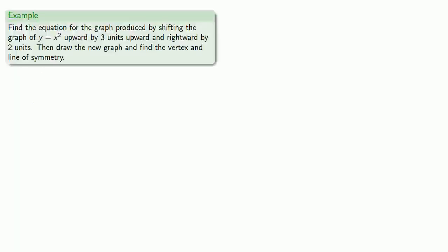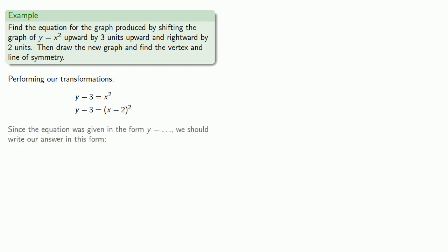For example, let's find the equation for the graph produced by shifting the graph of y equals x squared upward by 3 units and rightward by 2 units. Then let's draw the graph and find the vertex and line of symmetry. We'll perform our transformations. First, we'll shift the graph upwards, so y will become y minus 3. Then we'll shift the graph rightwards by 2 units, so x will become x minus 2. Since our equation was given in the form y equals stuff, we should write our answer in this form as well.